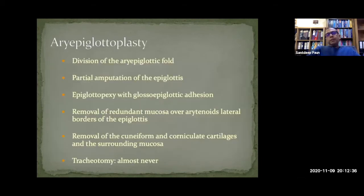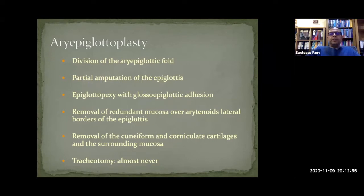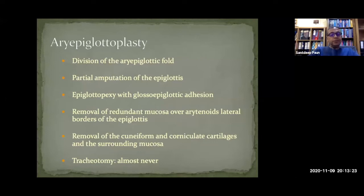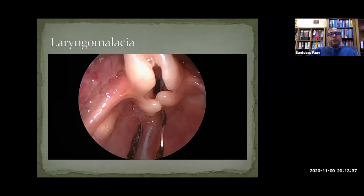Over time, we have all become very conservative regarding surgical treatment of aryepiglottoplasty. These days, all we do in the majority of cases is a division of the aryepiglottic fold. There are various other procedures that used to be done — epiglottopexy, stitching the epiglottis to the tongue base, removal of redundant mucosa — but they come with significant complications. Tracheostomy is almost never needed.